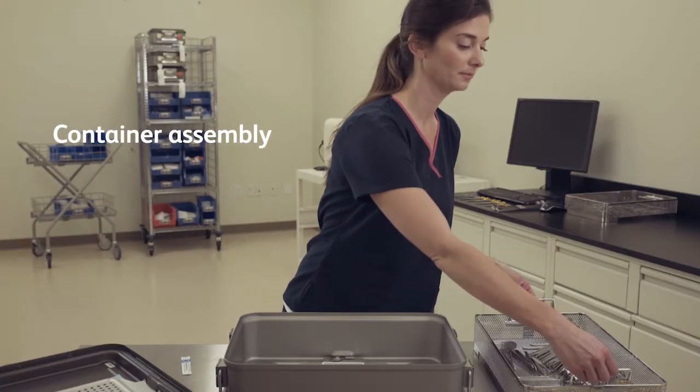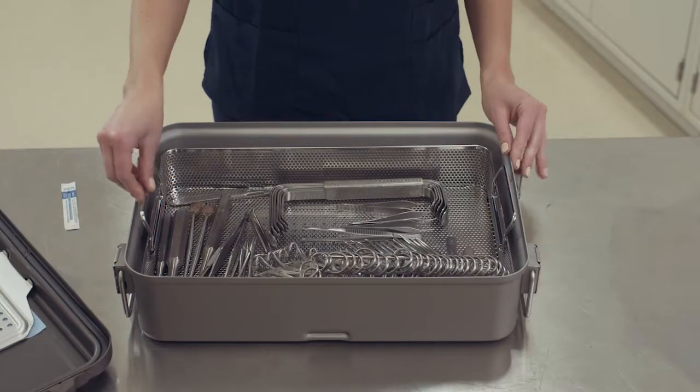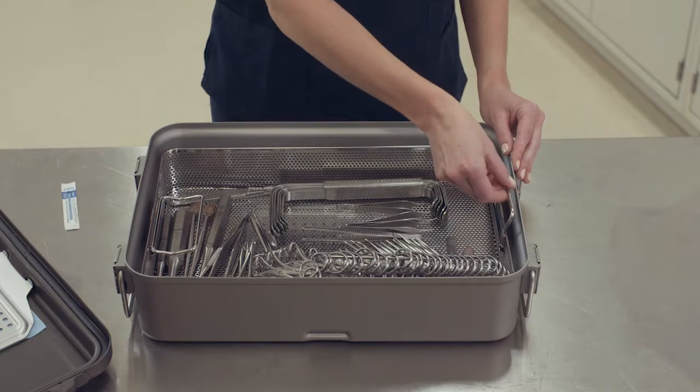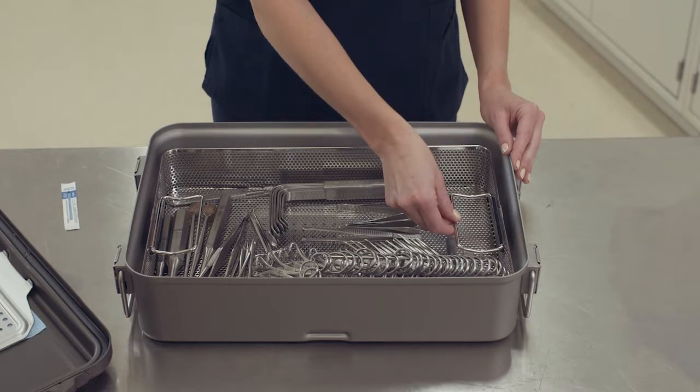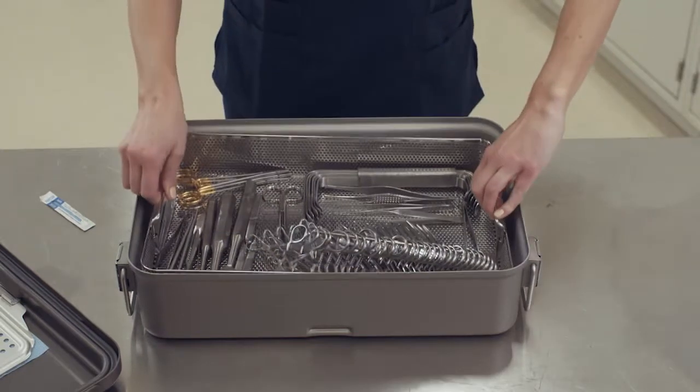To assemble the container for sterilization, place the appropriately sized basket with instruments into the container bottom. Ensure that the basket handles are facing properly. For the standard handle style, the handles should face toward the center of the basket. For the vertical handle style, the handles should be in the down position.